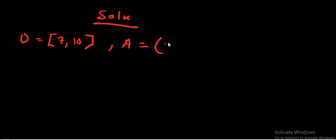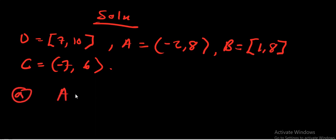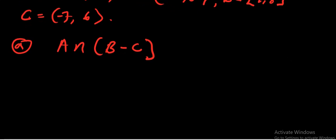Set A is equal to open bracket negative two comma eight, open bracket. Set B is equal to block brackets one comma eight, block brackets. Set C is equal to open bracket negative seven comma six, open bracket. The first part asks us to find A intersection open bracket B minus C. To solve this we first need to solve B minus C.